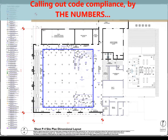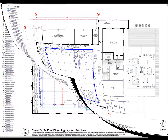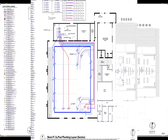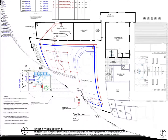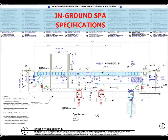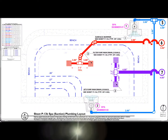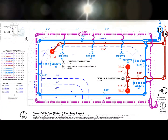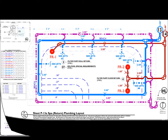We have discovered that gaining approval can be much more easily accommodated if we call out the intentions for compliance by the numbers. When suction and return lines are drawn on the plan showing the intentions for routing — inclusive of angle changes in directions, tees, or cross intersections — the maximum flow velocity can easily be cross-referenced with the designated pipe sizes and required turnover rates by the plan checkers, and authenticated as meeting the accepted limits for both pools and spas.